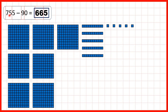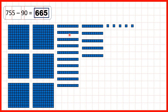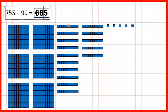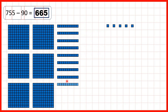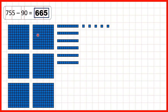For 755 minus 90, we need to subtract nine tens. Because we only have five tens, we need to exchange one of our hundreds for ten tens. Then we can subtract 9 tens, and that leaves us with six hundreds and six tens.